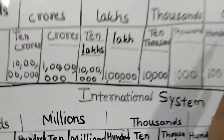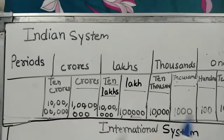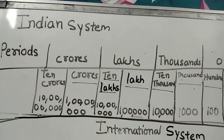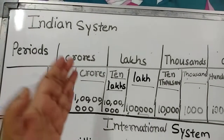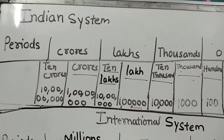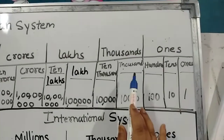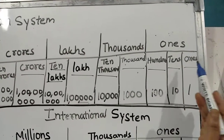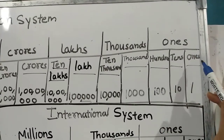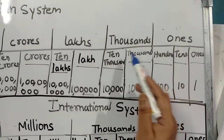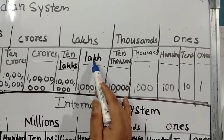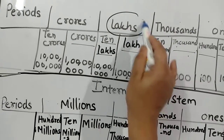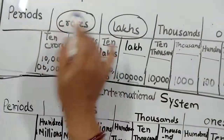So in this way, in the Indian number system, whenever you are numbering any big digits, if you are writing in the Indian system, it should start from the extreme right in the ones place — ones, tens, and hundreds; thousands and ten thousands; lakh and ten lakh; crore and ten crore. The unique words in this system are lakh and crore.